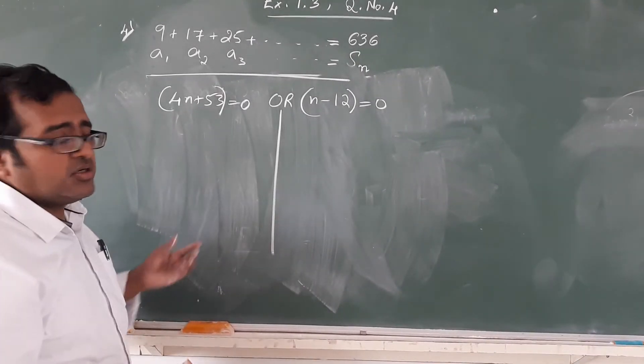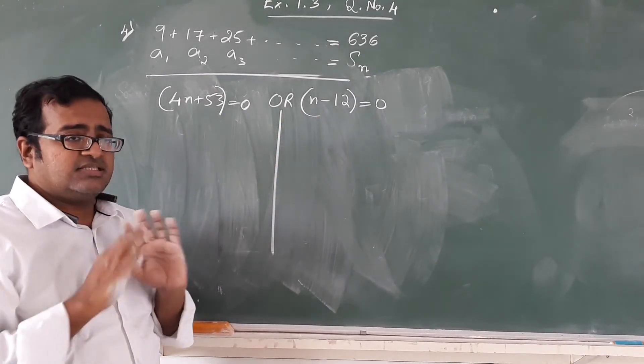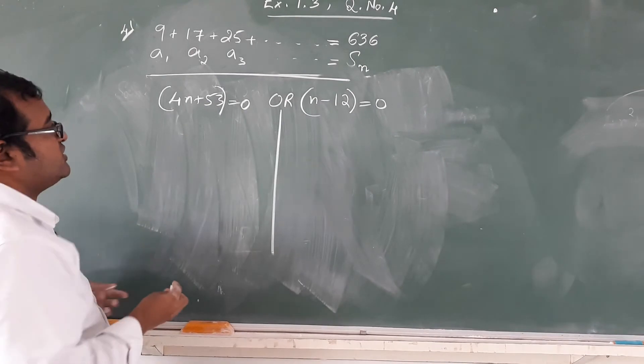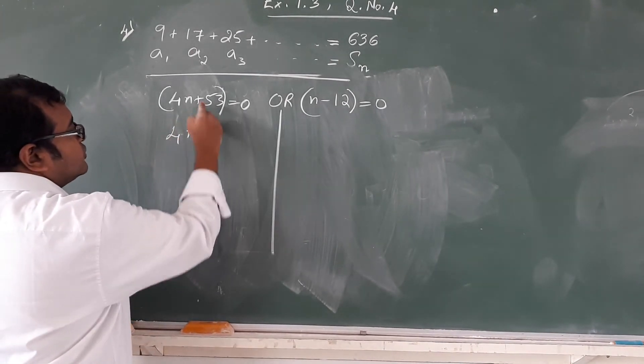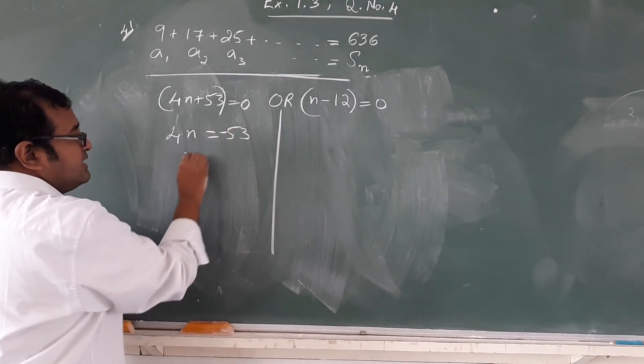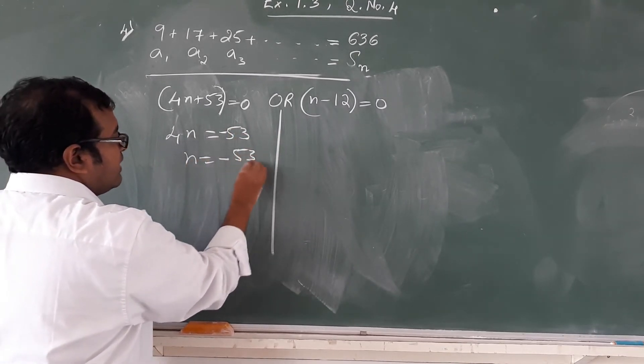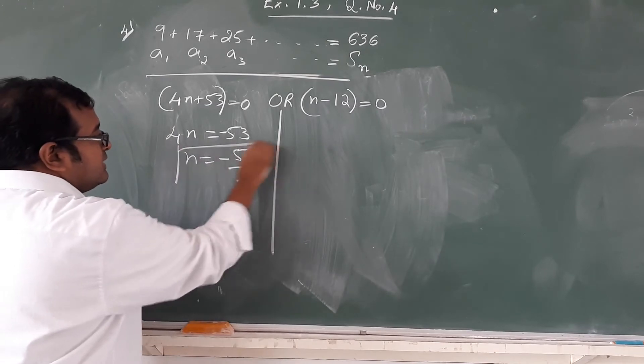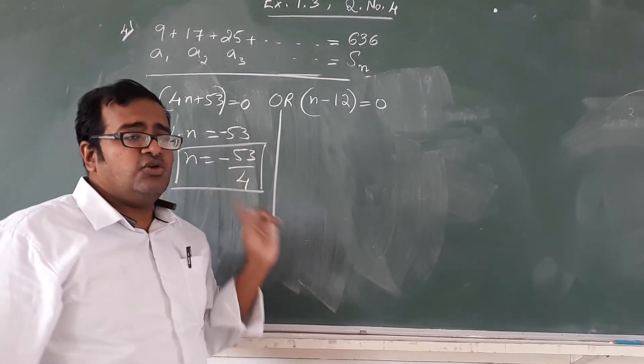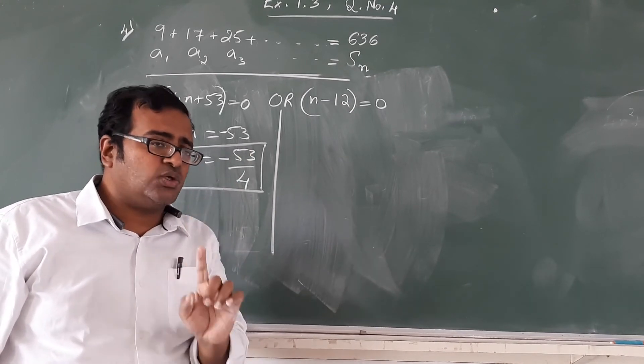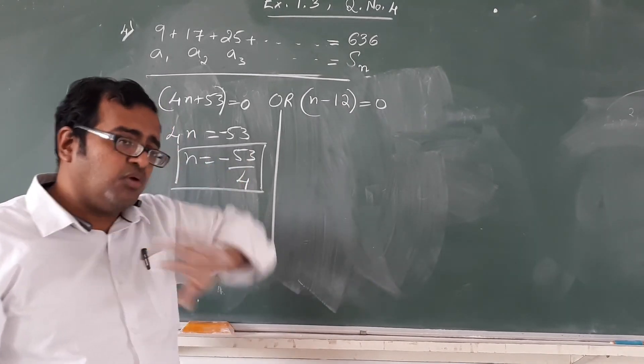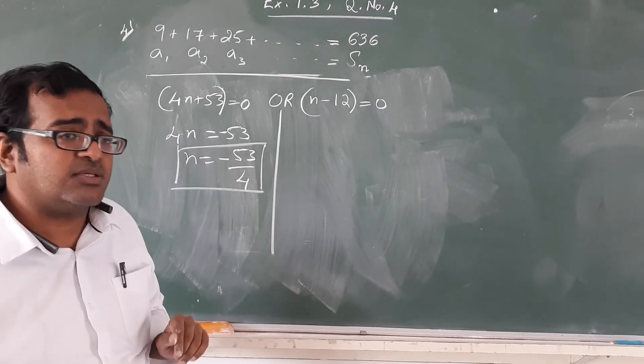We will now look at the two factors separately. Their possibilities being first one 0 or second one 0. If we take first one as 0, then 4n equals, plus 53 becomes minus 53, and n equals minus 53 by 4. This cannot be possible because of two reasons. See, n value has to be always a natural number and minus 53 by 4 is negative as well as a fraction. For both reasons, this cannot be our acceptable value.